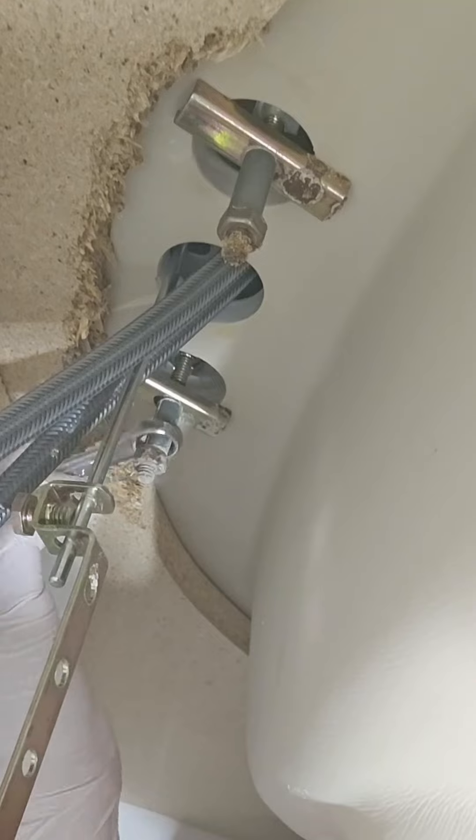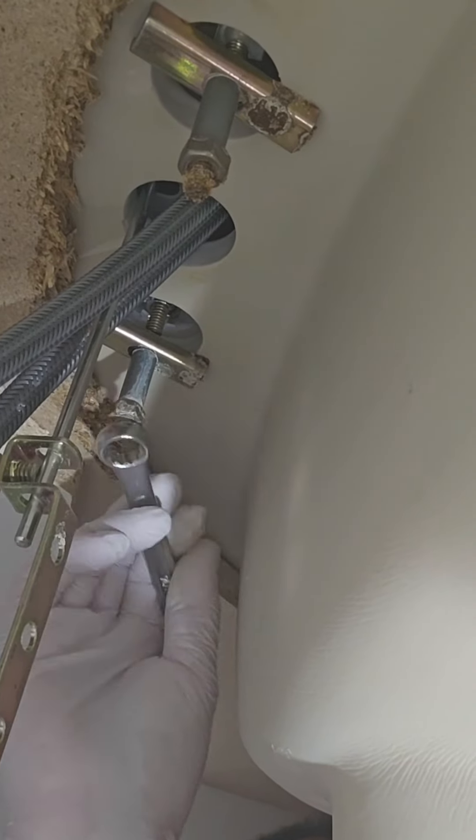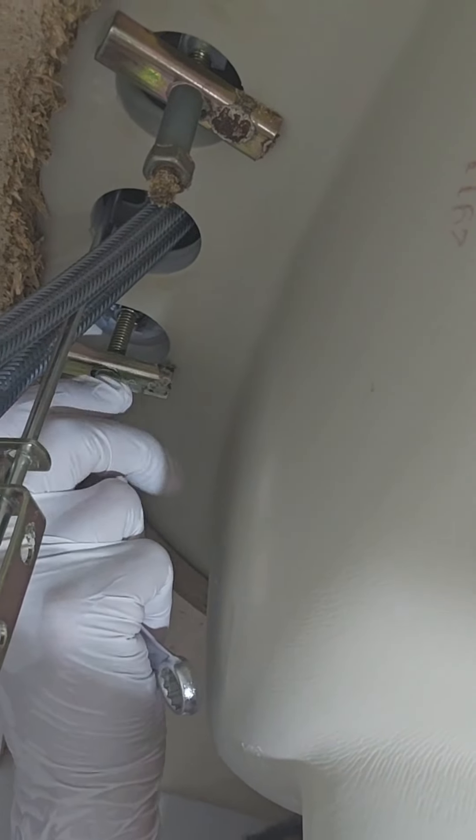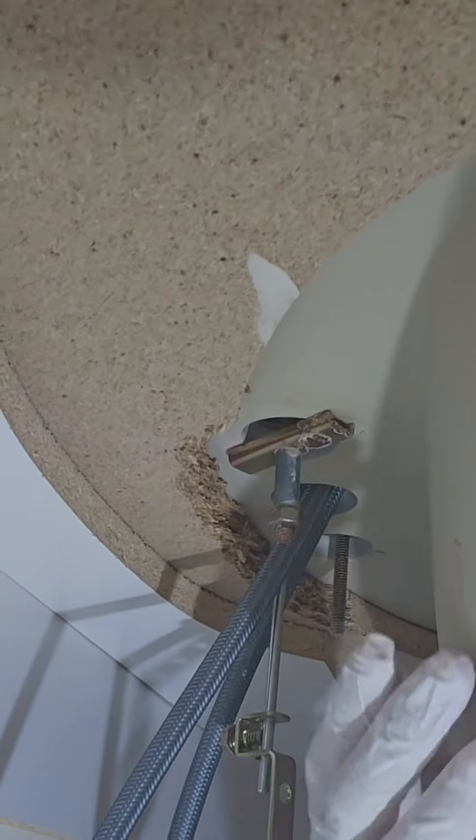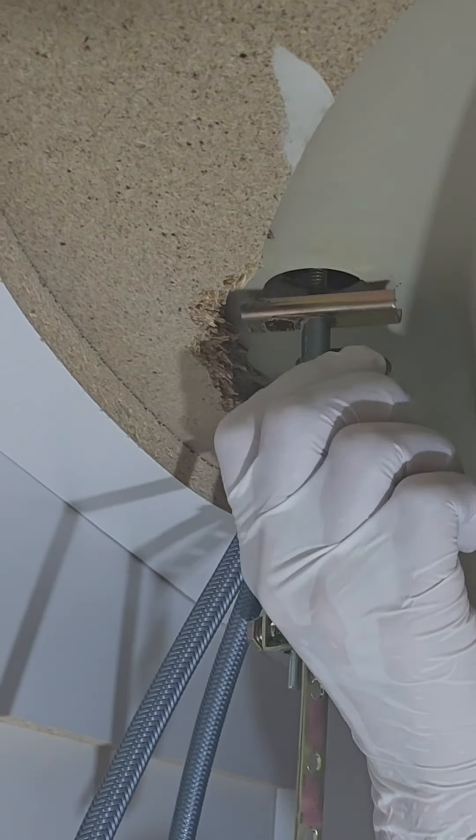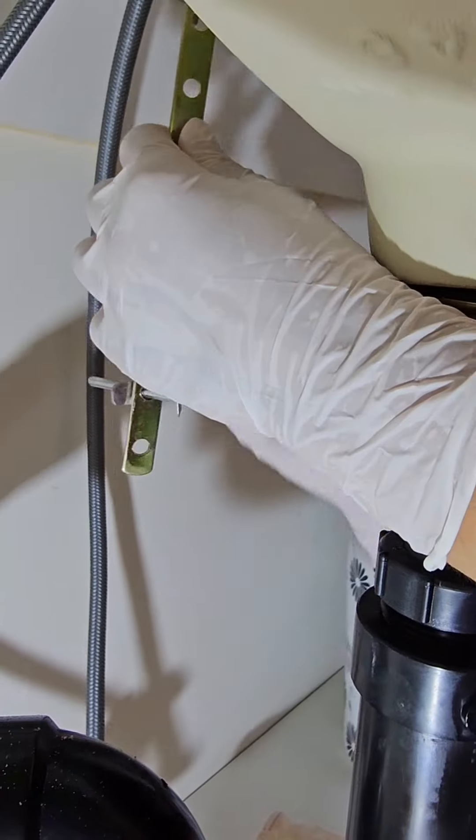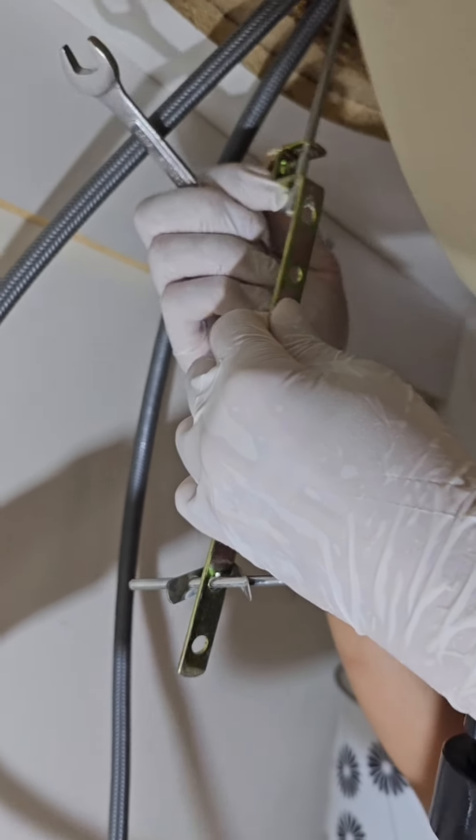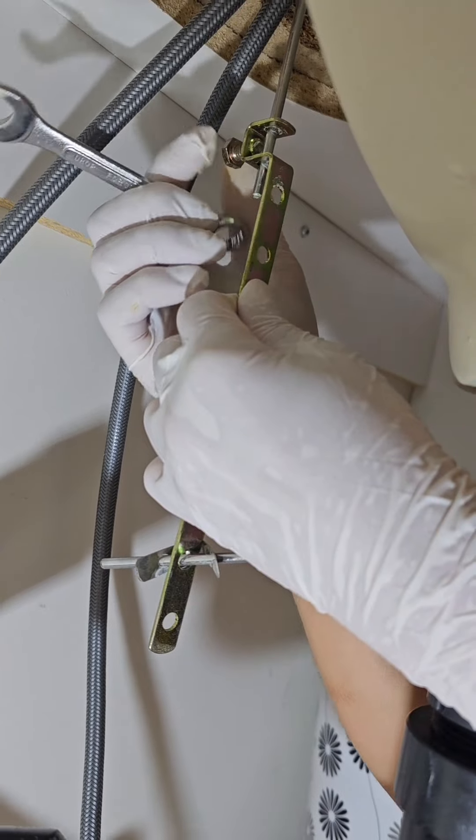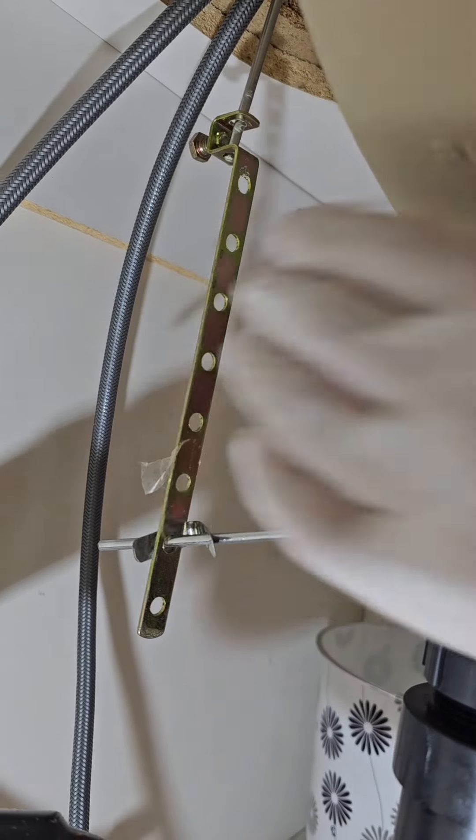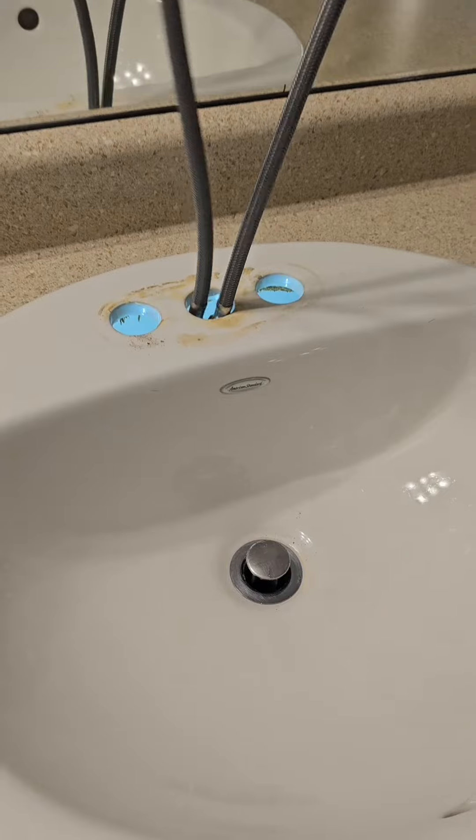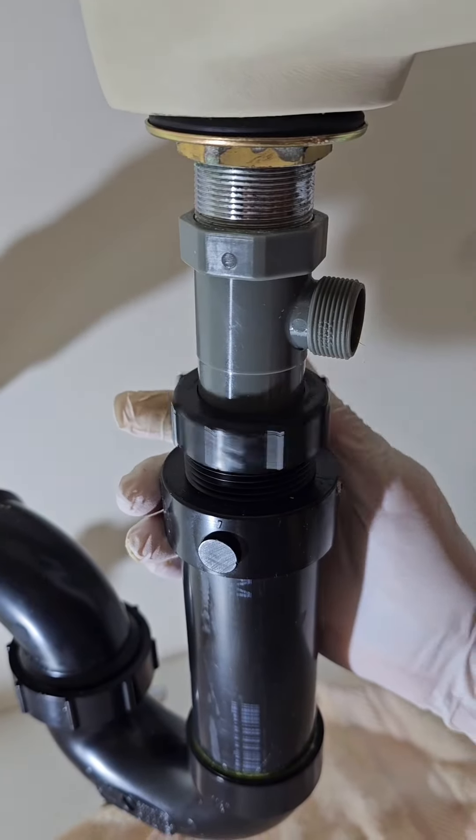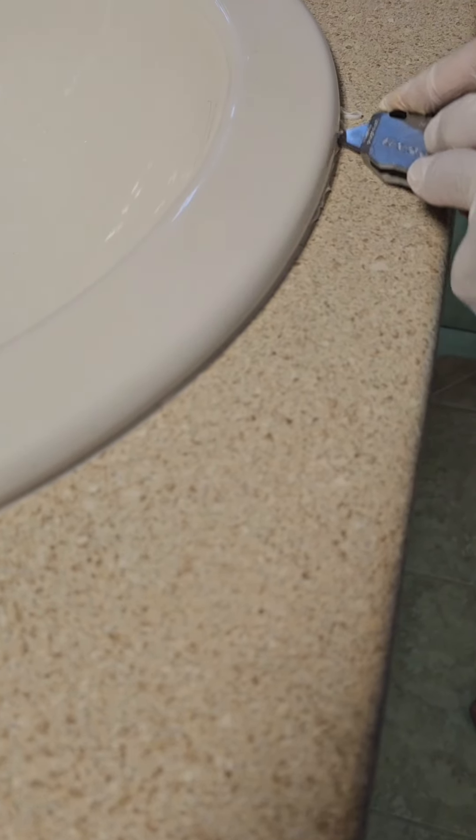Now it's time to remove any clamps holding the sink onto the countertop. Unscrew and remove the clevis strap from the lift and pivot rods. Now, lift out the whole faucet. Let's remove the pivot rod and unscrew the slip knot from the P-trap to free the sink.